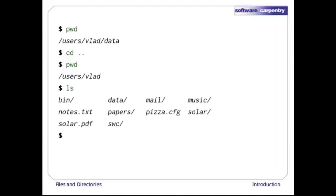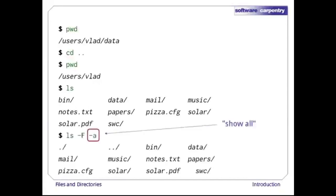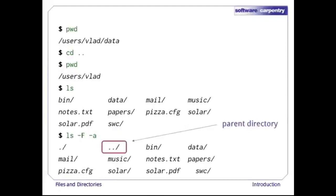The special directory dot-dot doesn't usually show up when we run ls. If we add the -a flag, though, it will be displayed. -a stands for 'show all'. It forces ls to show us directory names that begin with dot, such as dot-dot, which if we're in /users/vlad, points to the users directory.